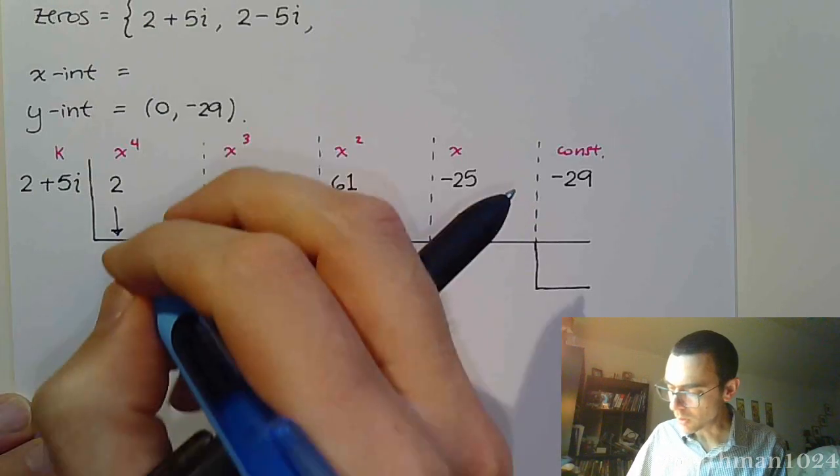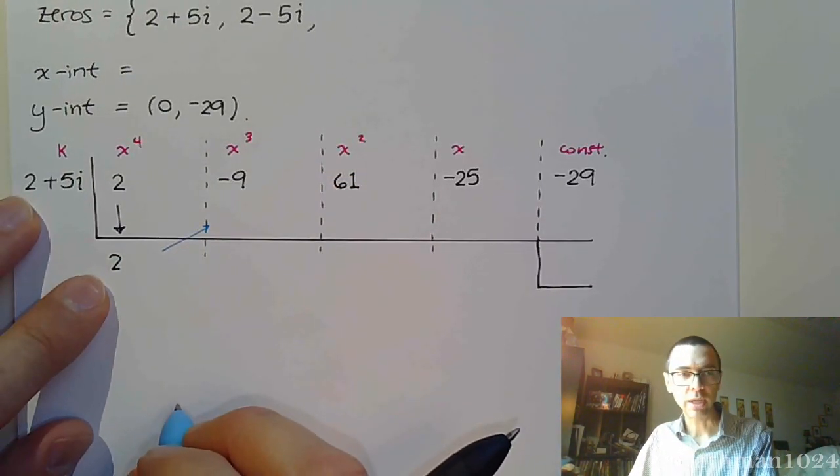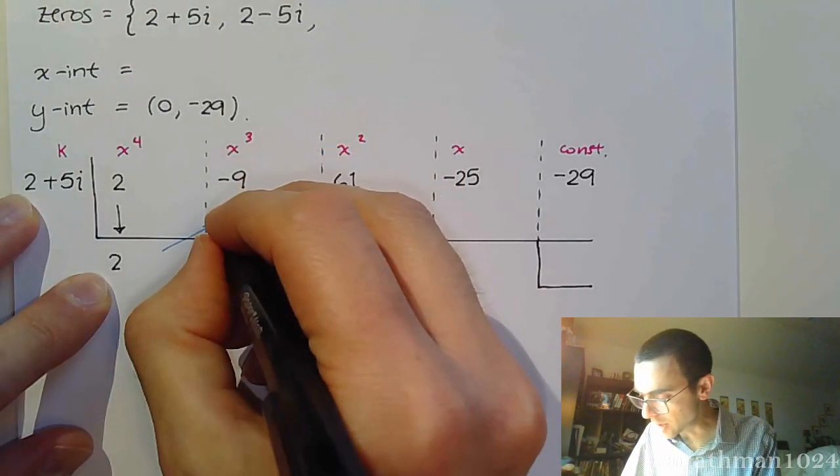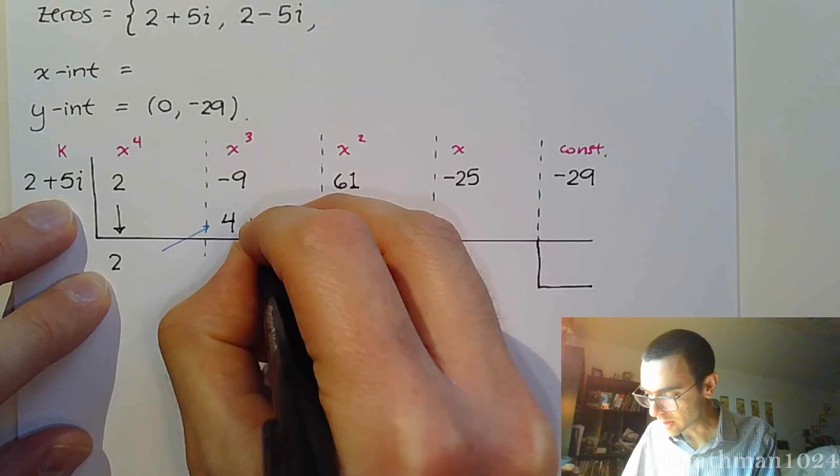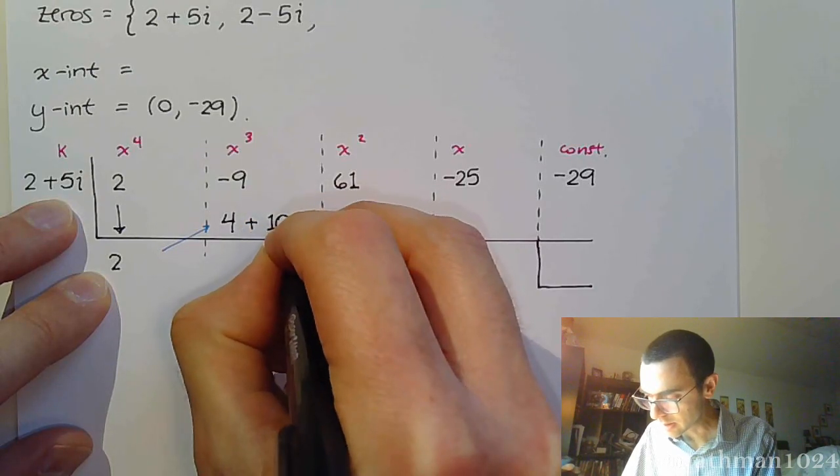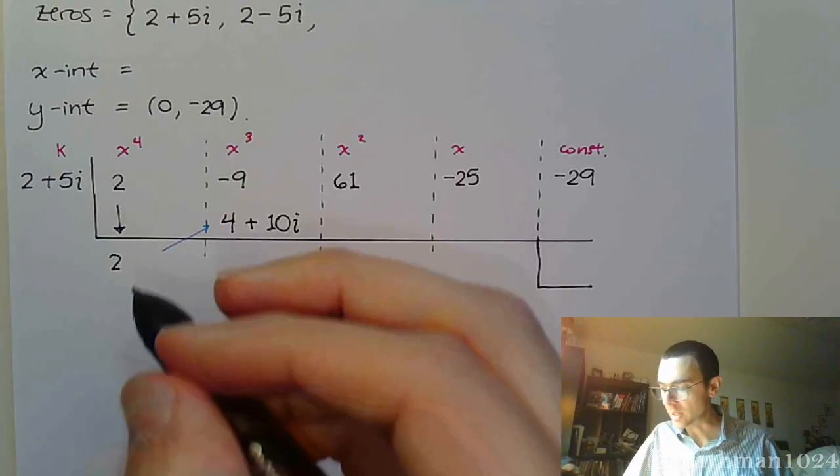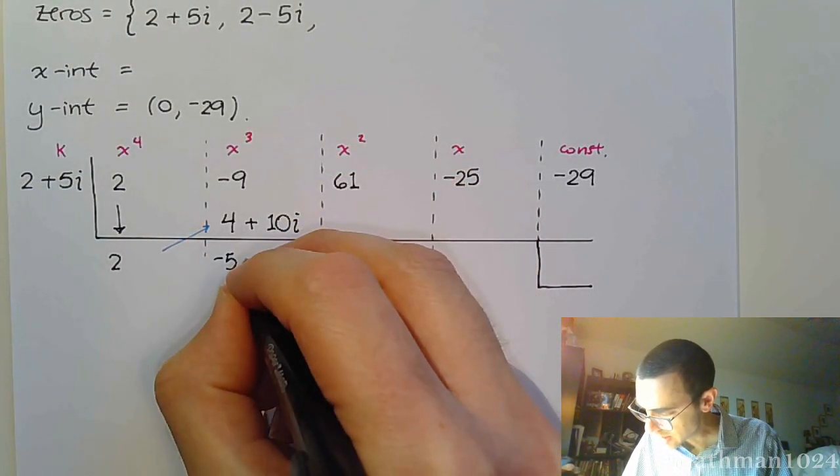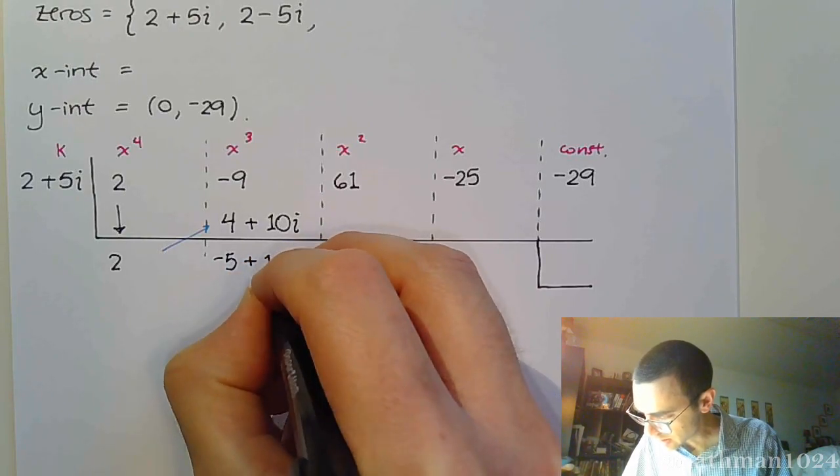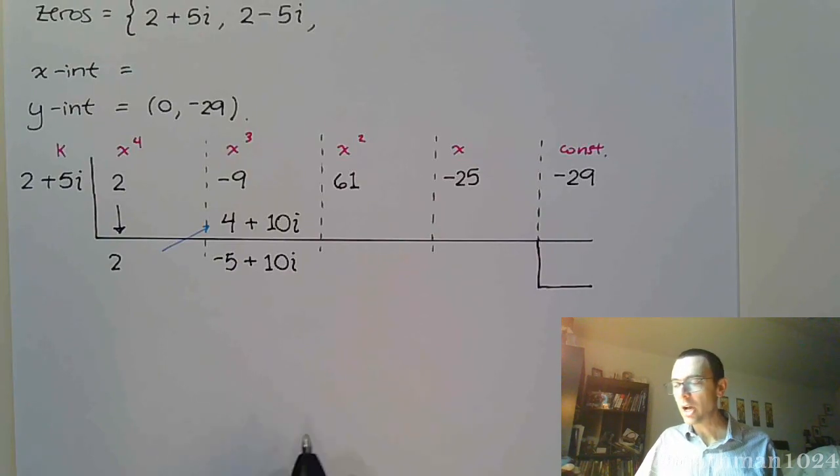And then my coefficients are 2x^4, -9x^3, +61x^2, -25x, -29. Alright. Now, if we do all of this correctly, over here in that remainder box, it should be 0. Even with the imaginary stuff. So, let's see what happens. First of all, bring down the 2. And now, we're going to multiply. Well, we're multiplying 2 times this complex number. So, that's 2 times 2. We get 4. 2 times 5i, that's plus 10i.